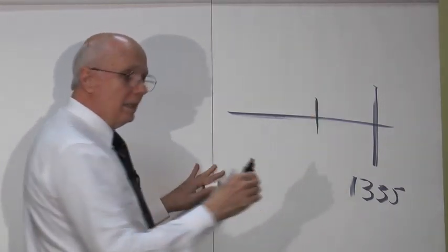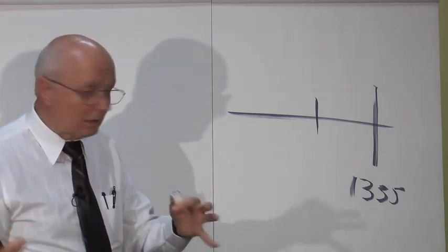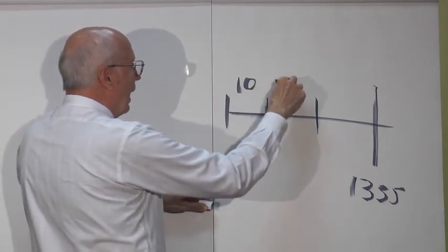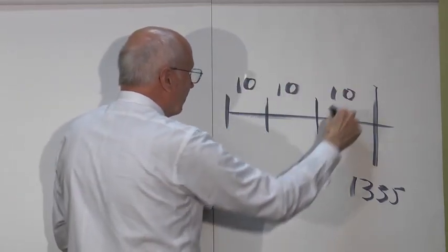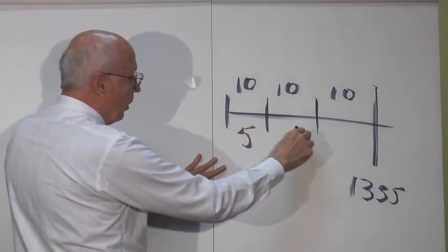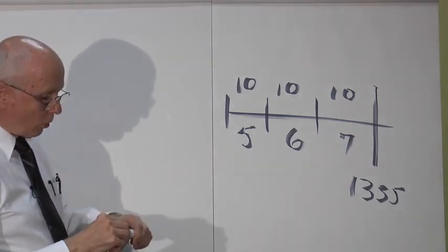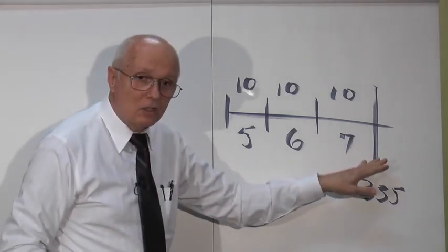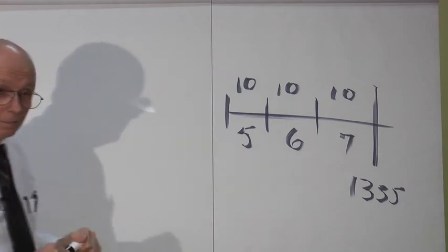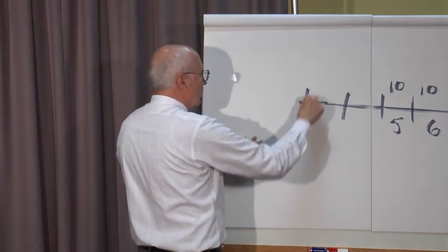I believe, and I believe I can demonstrate this, but I'm not going to take the time tonight, but I believe that the seven bowls, each one lasts 10 days. So bowl five, bowl six, bowl seven. And so seven bowls take 70 days. Right? Everyone understands what I'm saying.